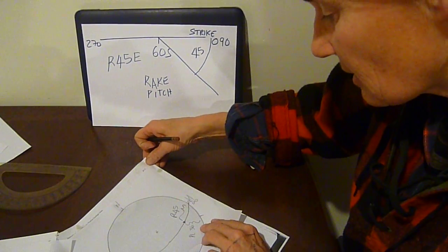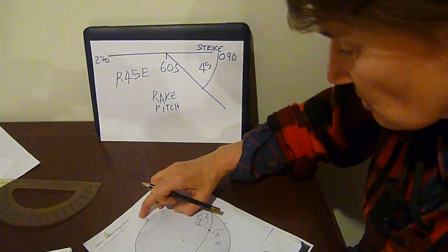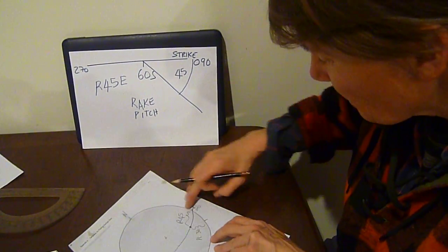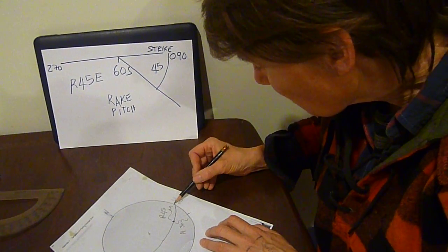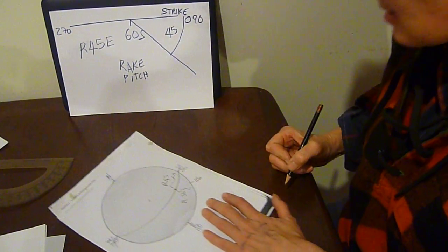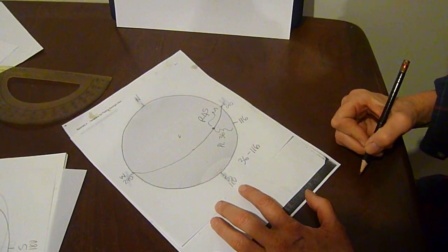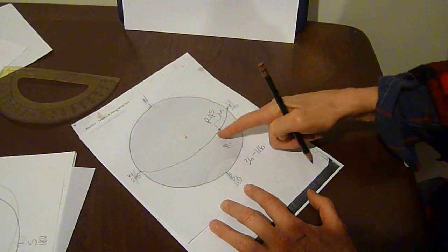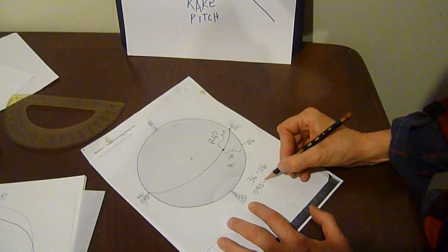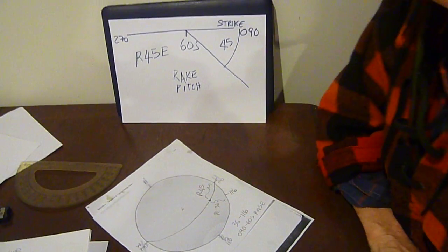For interest's sake, the bearing I can find by setting my tracing paper overlay back to the original position, lining up my geographic coordinates with AB and XY. And I can count around — 090, I was here, 100, 110, 116. So the bearing and plunge is 36 towards 116. That's the orientation of the line. But I could also say that the line is in the plane 090, 60 south and has a rake of 45 from the east.